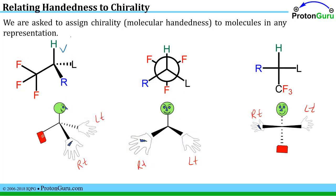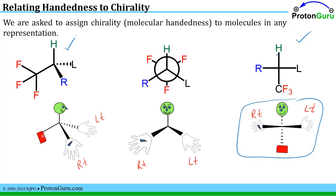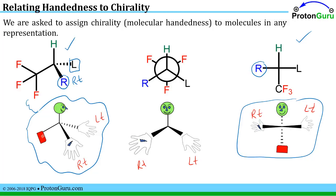If we're asked to convert this line-bond structure into a Fischer projection, remember that a Fischer projection by definition has horizontal lines coming towards us and the other lines leaning away from us. Using the push-up man analogy: this is the person's right hand, this is the right hand in the Fischer projection, the left hand is the L group, the head corresponds to the top position, the feet would be the CF3 group. That's a relatively easy way to think about molecular handedness and interconverting between different structures.